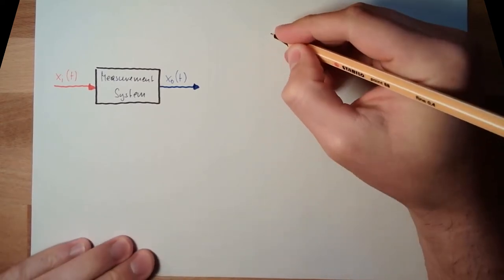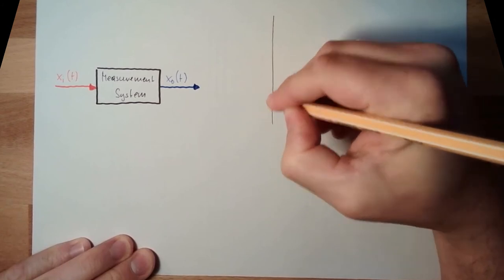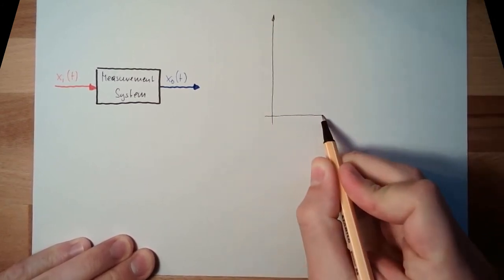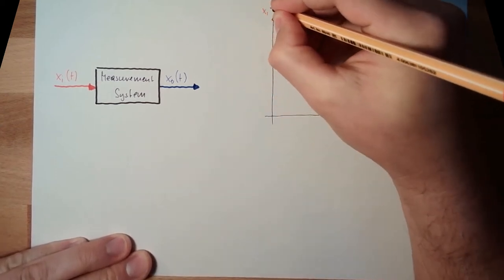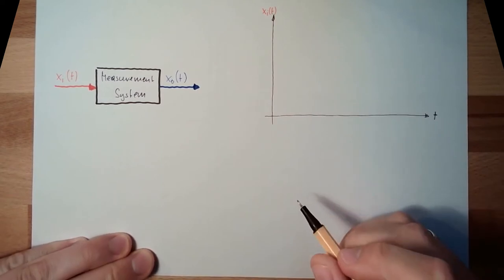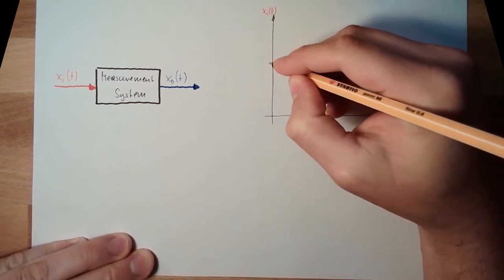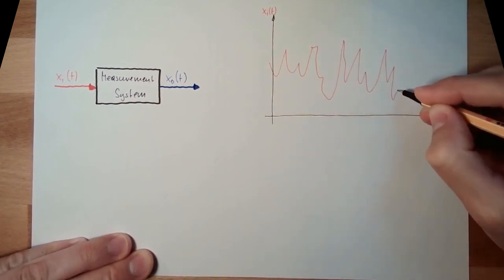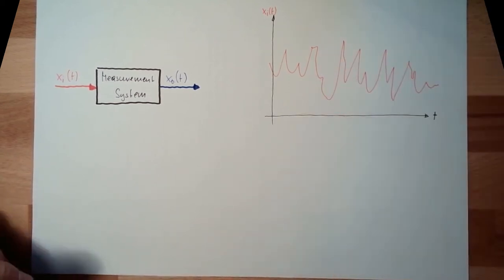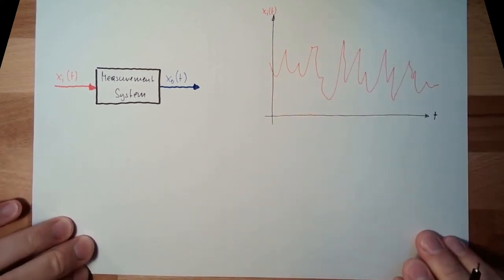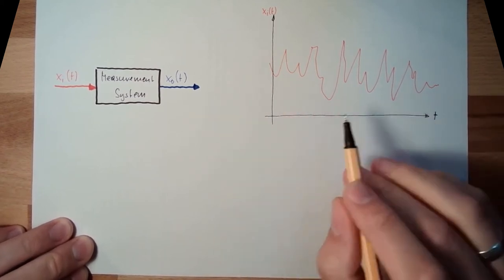What might be dynamic? So if we have here the time t, and here I will draw the input value. The input value may be something like this. Stochastic, this is called. There is no period, there's nothing, it just looks a little bit like noise, but could be. This is maybe not that possible, but I hope you understand what I mean.